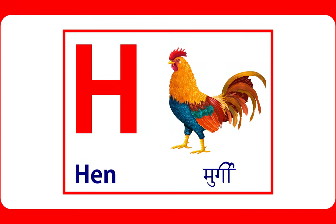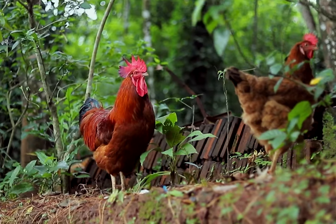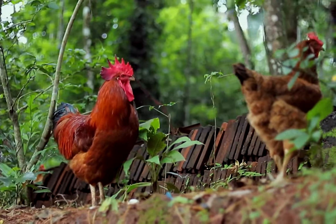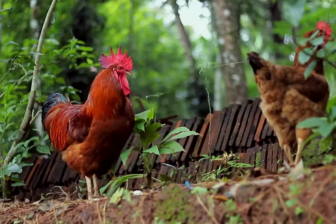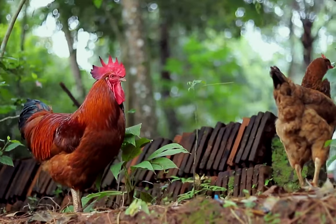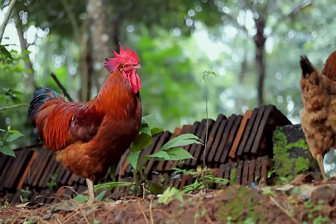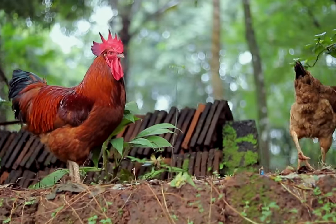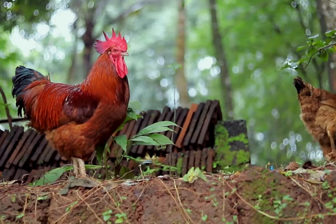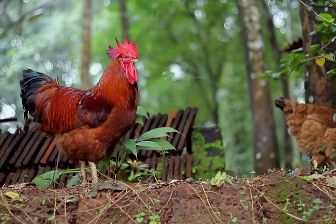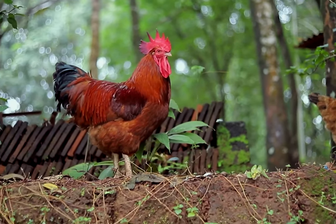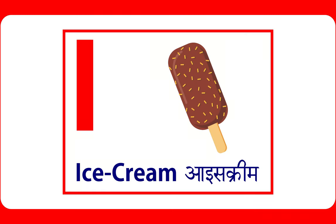H is for hen. Hen lives in a coop. I is for ice cream. Ice cream is used for eating.